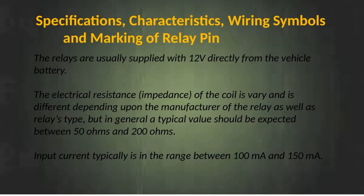Specifications, characteristics, wiring symbols and marking of relay pins. The relays are usually supplied with 12 volts directly from the vehicle battery. The electrical resistance of the coil varies depending upon the manufacturer and relay type, but in general a typical value should be expected between 50 ohms and 200 ohms. Input current typically is in the range between 100 milliampere and 150 milliampere.